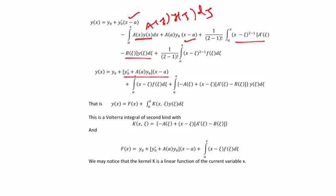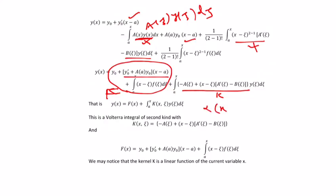Then you take a(x) y(x) as a(psi) y(psi) d psi, so that you can combine these two terms. Taking y(psi) common, we now have the integral: y(x) equal to f(x) plus the integral from a to x of k(x, psi) y(psi) d psi, where k is given and f(x) is given. This is nothing but the Volterra integral equation of the second kind, because here the coefficient alpha(x) equals 1. So like that we can reduce a second order differential equation into an integral equation.